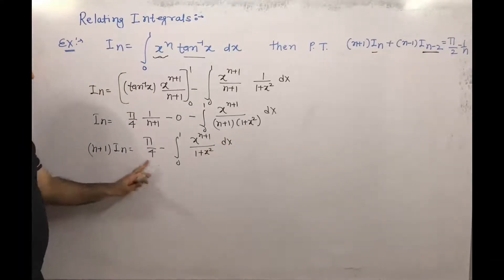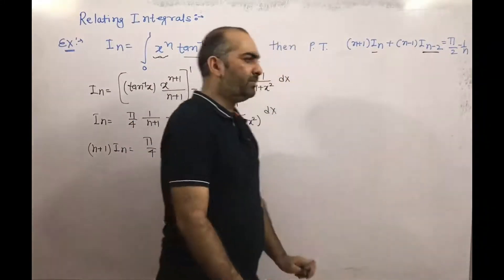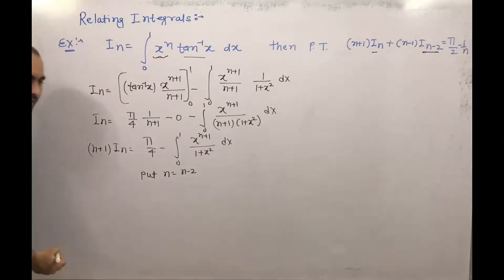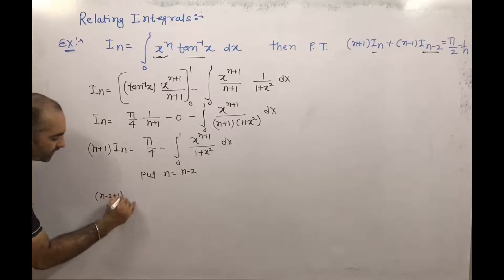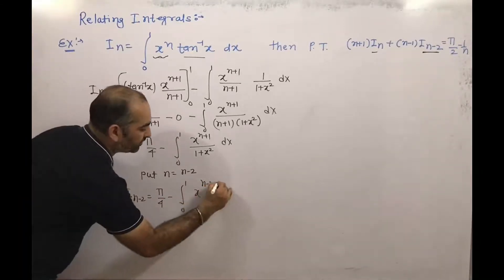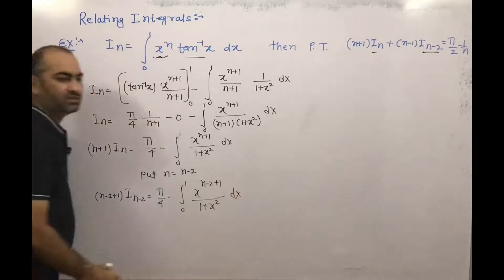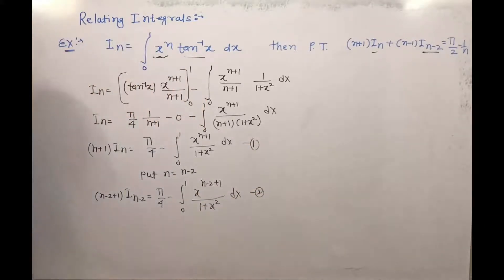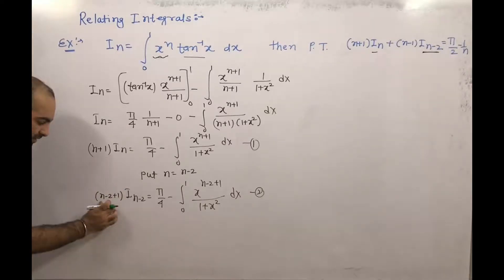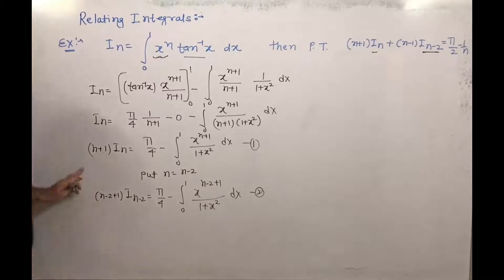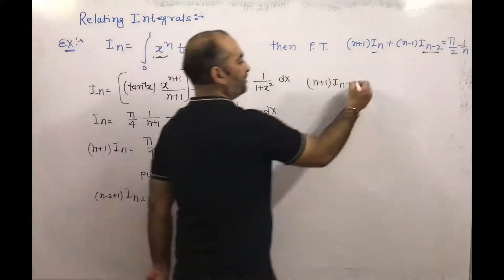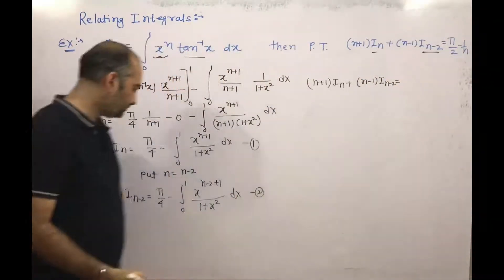We now need (n-1)I(n-2). In Equation 1, replace n with n-2: (n-2+1)I(n-2) = π/4 - integral from 0 to 1 of x^(n-1)/(1+x²) dx, which gives (n-1)I(n-2) = π/4 - integral of x^(n-1)/(1+x²) dx. This is Equation 2. Adding Equations 1 and 2 to get (n+1)In + (n-1)I(n-2).